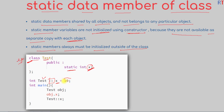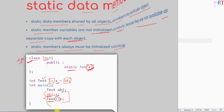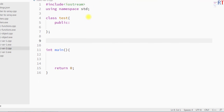We can access the value of a static data member in two ways: either using an object of the class along with the dot operator, or using the name of the class along with the scope resolution operator to access the value of that static member.